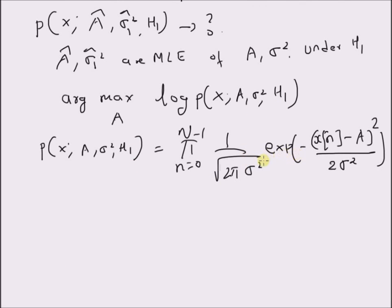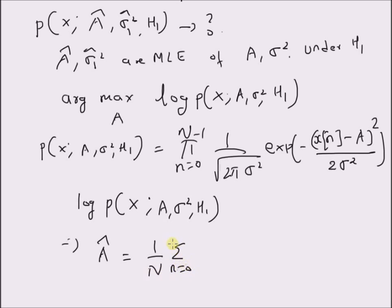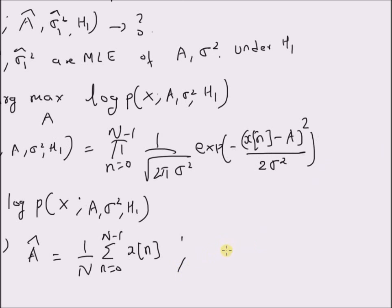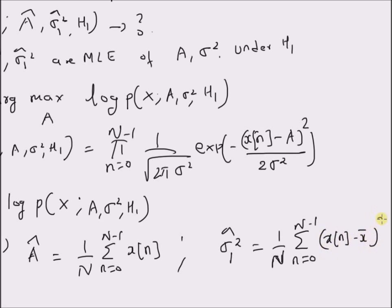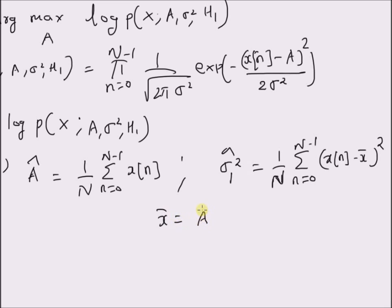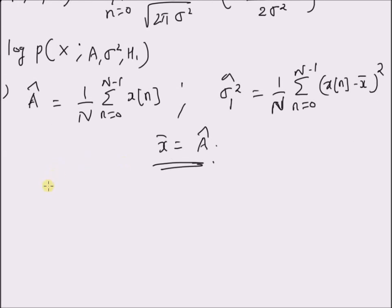Note that this problem is already solved in the previous video, where we maximize the logarithm of the probability distribution of x with parameters A and sigma squared. The results are: A-hat equals the sample mean, (1/N) Σ x(n) for n = 0 to N−1. The maximum likelihood estimate of sigma squared, denoted sigma-one-squared-hat, equals (1/N) Σ (x(n) − x̄)², where x̄ equals A-hat. These two estimates can now be used to construct the likelihood probability distribution for x under H1.